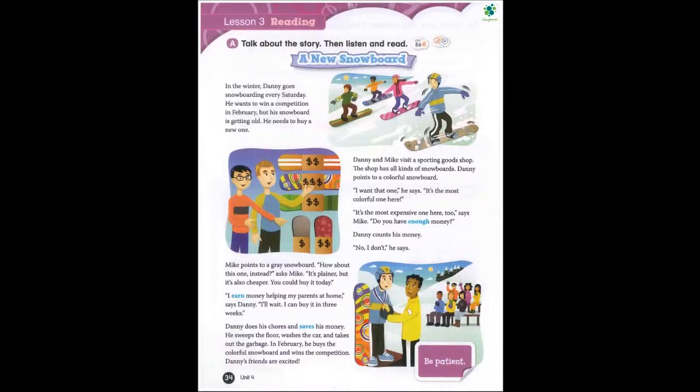Page 34. Lesson 3: Reading. A. Talk about the story, then listen and read. A New Snowboard. In the winter, Danny goes snowboarding every Saturday. He wants to win a competition in February but his snowboard is getting old. He needs to buy a new one. Danny and Mike visit a sporting goods shop. The shop has all kinds of snowboards. Danny points to a colorful snowboard. 'I want that one,' he says. 'It's the most colorful one here.' 'It's the most expensive one here too,' says Mike. 'Do you have enough money?'